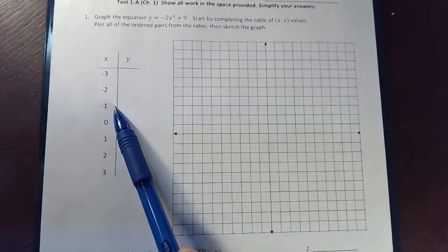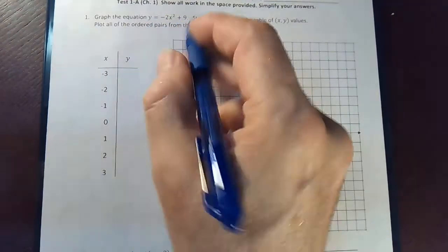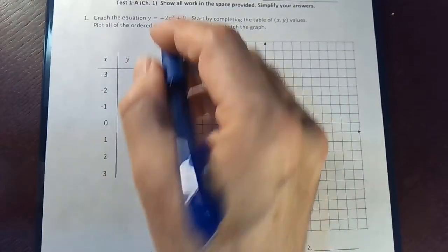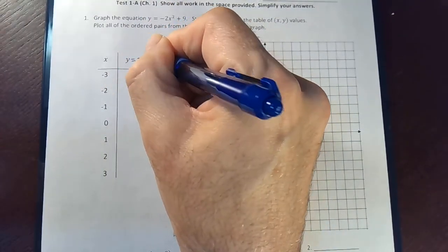And then we'll have 1, 2, 3, 4, 5, 6, 7 points to graph, and we'll draw a nice smooth curve through those points. So let me write down up here, y is negative 2x squared plus 9.